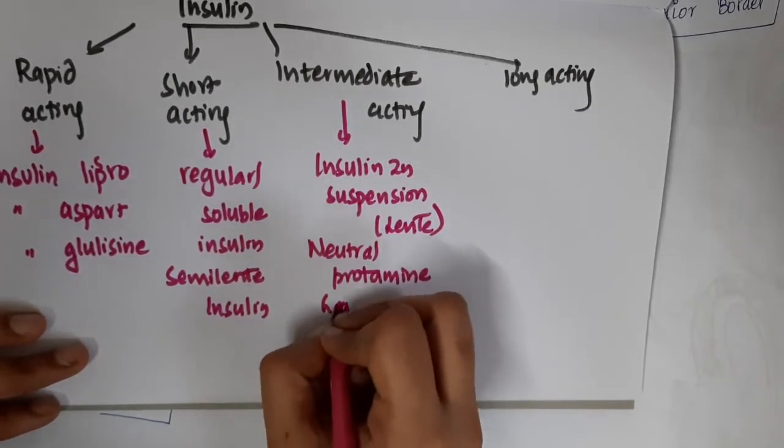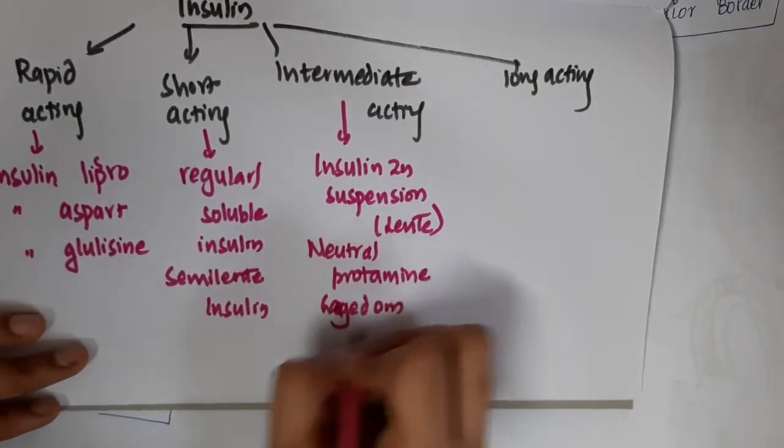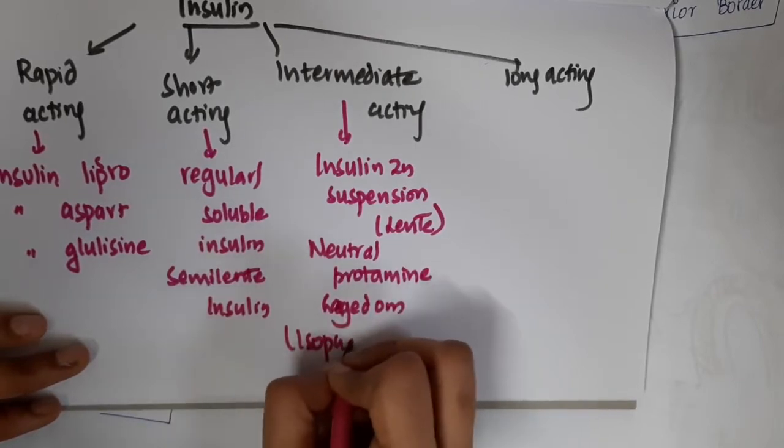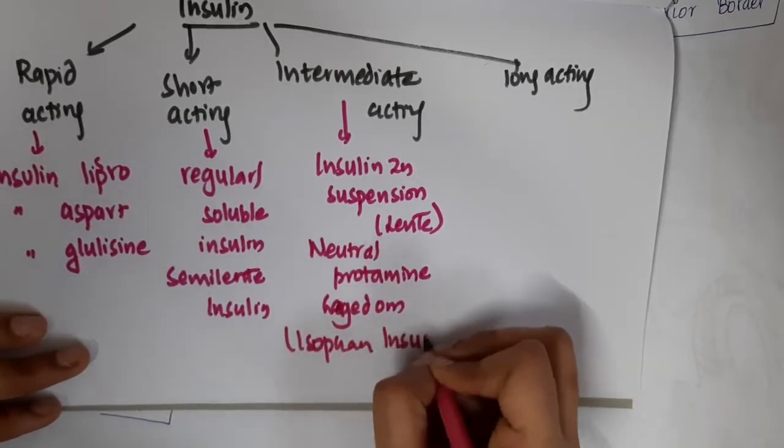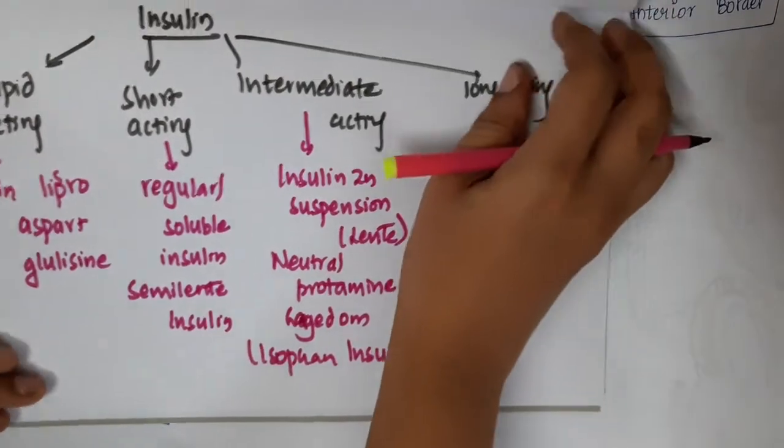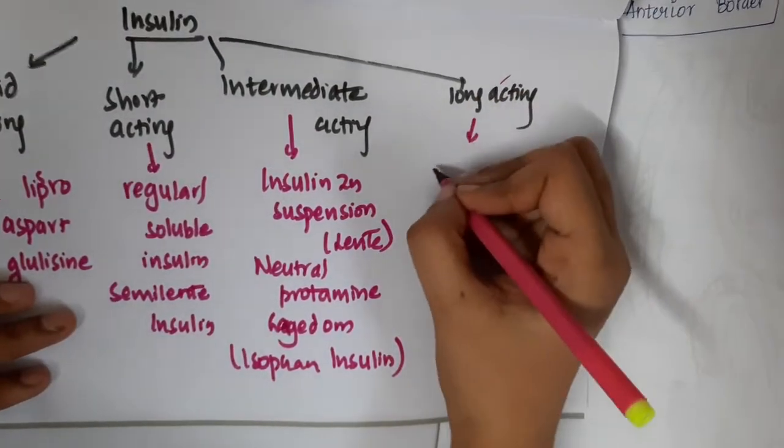Neutral protamine Hagedorn, which is isophane insulin. Neutral protamine Hagedorn, which is isophane insulin.